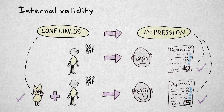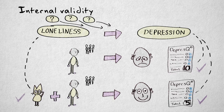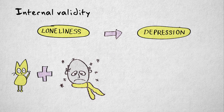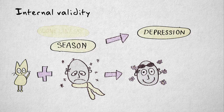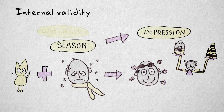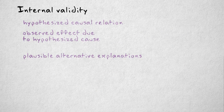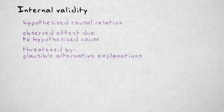Can we conclude depression went down because the elderly felt less lonely? Well, maybe something else caused the decrease in depression. For example, if the study started in the winter and ended in the spring, then maybe the change in season lowered depression. Or maybe it wasn't the cat's company, but the increased physical exercise from cleaning the litter box and feeding bowl. Alternative explanations like these threaten internal validity. If there's a plausible alternative explanation, internal validity is low.